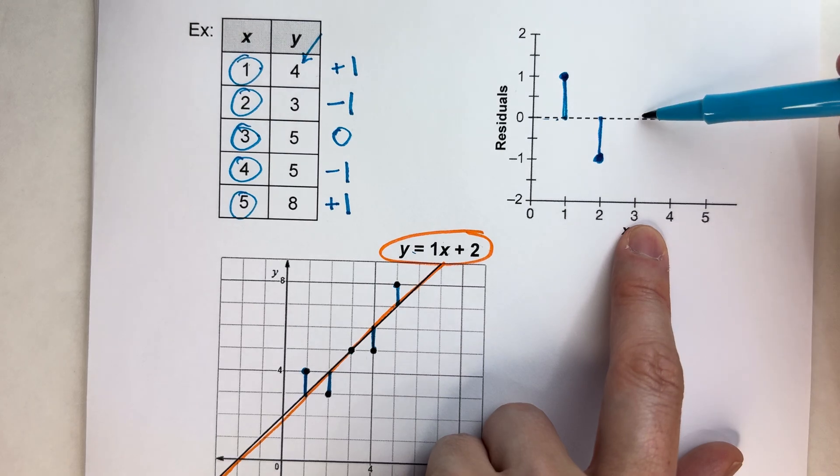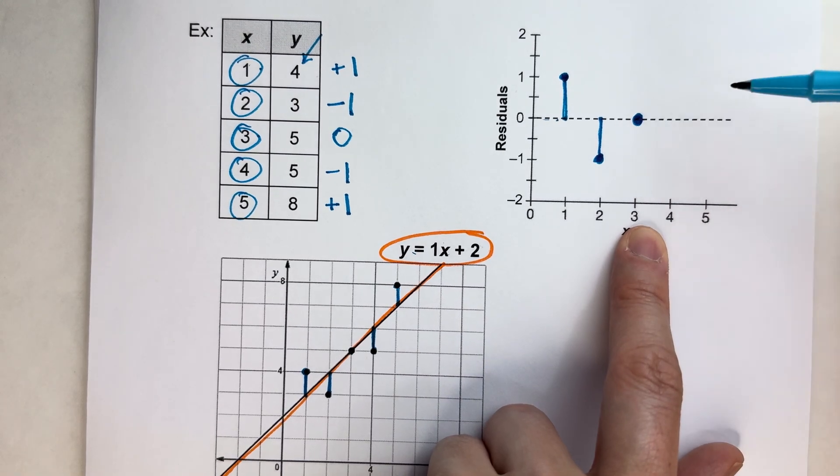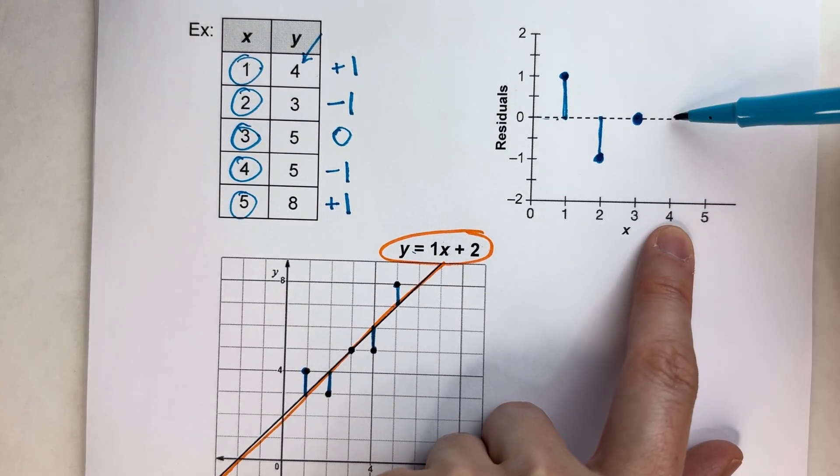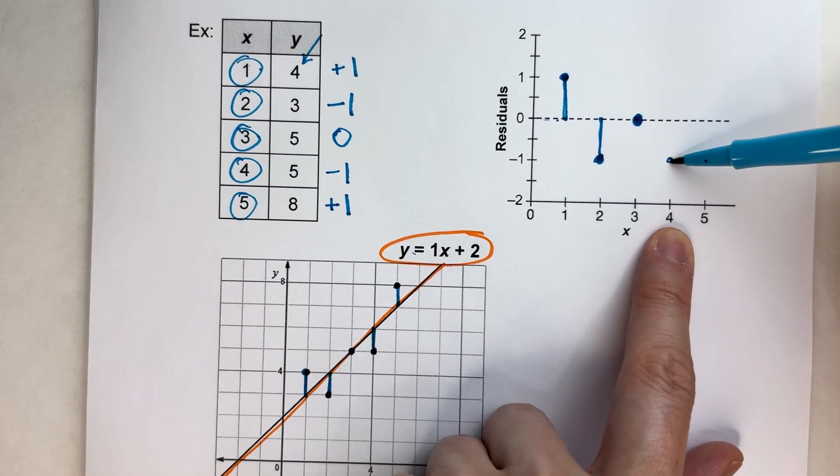For 3, it was 0. So it actually ends up there. For 4, it was negative 1. So 4, negative 1.